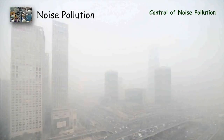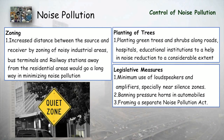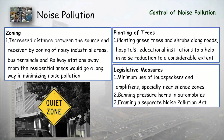Additional control methods include zoning, where specific areas such as railway stations, residential zones, hospitals, and schools are declared quiet zones where honking is not allowed. Planting trees is also effective, as trees are soft materials that absorb noise. Finally, legislative measures should include strict laws on the use of loudspeakers and amplifiers, banning high-pressure horns in automobiles, and framing separate noise pollution acts.